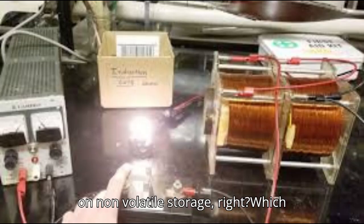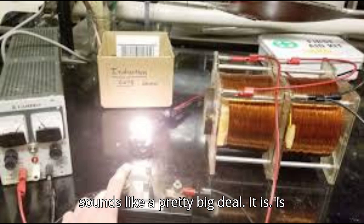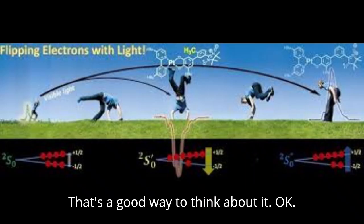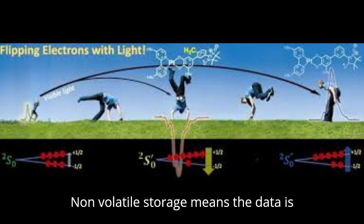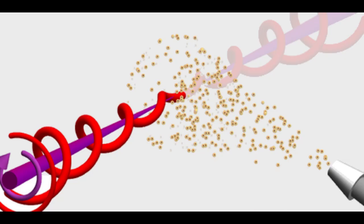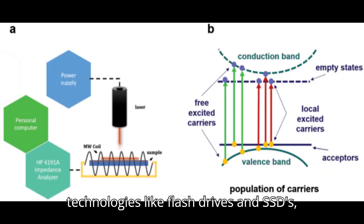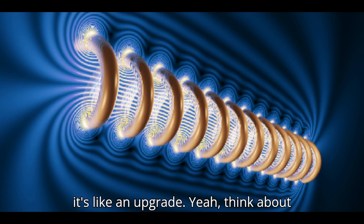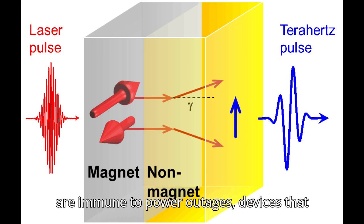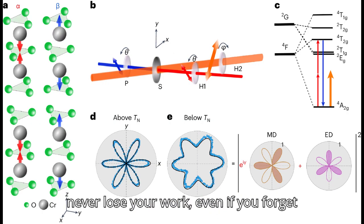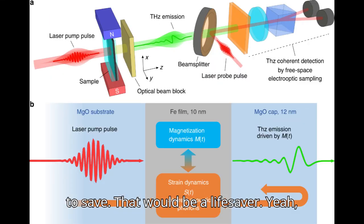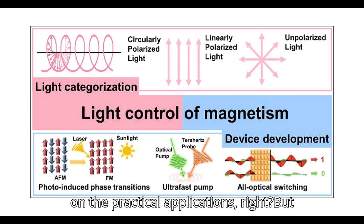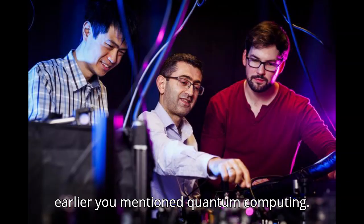You also touched on non-volatile storage. Is that like a hard drive that never forgets anything even if the power goes out? That's a good way to think about it. Non-volatile storage means the data is retained even when there's no power. This is already possible with technologies like flash drives and SSDs, but light induced magnetism could make it even more reliable and robust. We're talking about data centers that are immune to power outages, devices that never lose your work even if you forget to save.